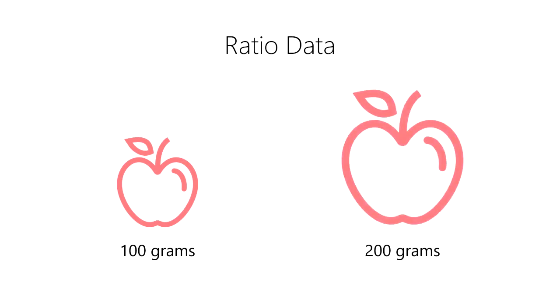Unlike an interval scale, it makes perfect sense to say that a 100 gram apple is half the mass of a 200 gram apple. This is because zero grams on this scale represents a natural minimum quantity, that is, no mass at all.